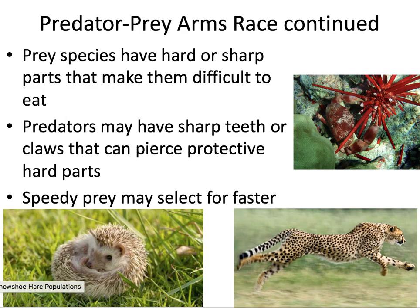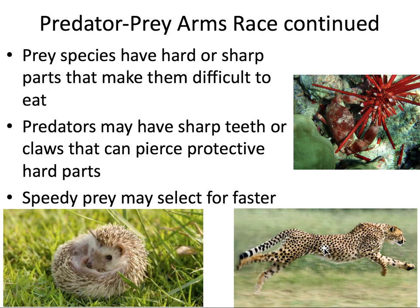Prey species aren't just passive — they have defenses that allow some protection from their predators. Some prey items have spikes or thorns, or like the hedgehog, can roll into a ball and are very difficult for a predator to eat. Predators, on the other hand, will evolve ways to eat their prey. Here you can see a crab with claws that can pierce the sea urchin so it can use it for energy. Predators can also evolve to become faster in response to speedy prey — they are co-evolving and adjusting in response to the prey.